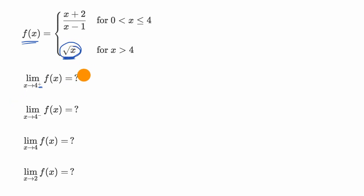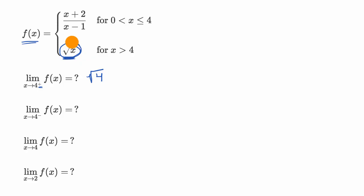This is going to be equal to the square root of four. Even though right at four our f of x is equal to the other piece, we are approaching from values greater than four — approaching from the right. So we would use this part of our function definition, and so this is going to be equal to two.